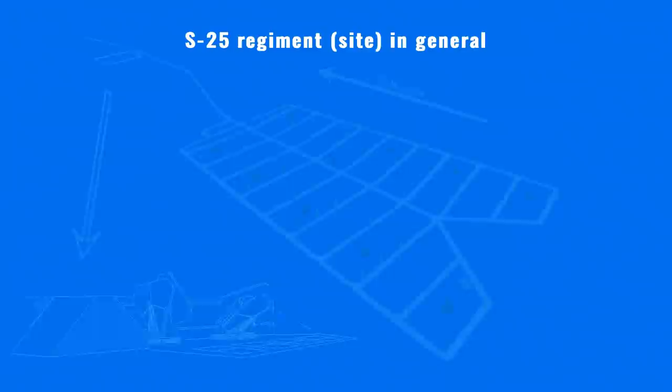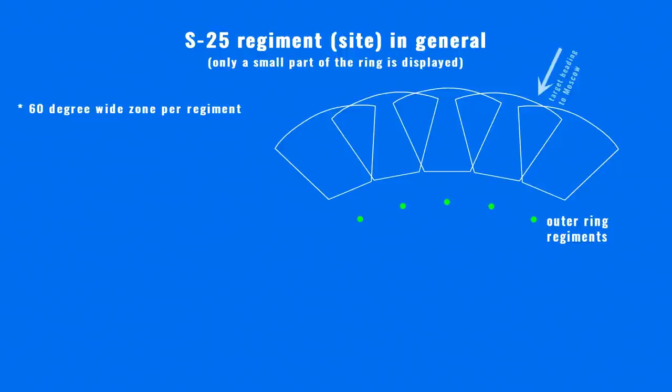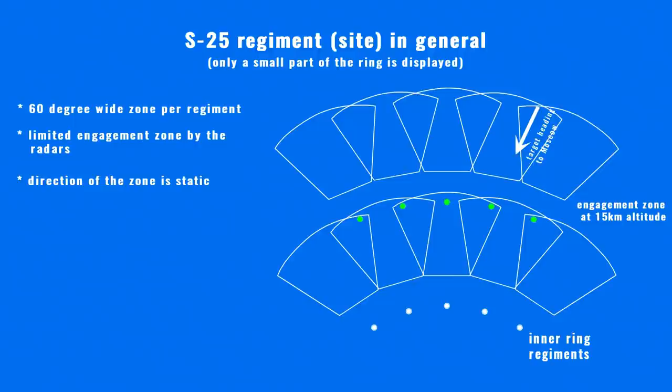The S-25 batteries were not all 100% identical, but the basic layout of the sites was similar. The sites could launch missiles only in directions outward of Moscow, due to the design of the Yo-Yo antenna system. Once a target reached the minimal engagement range of the outer ring, only the inner ring could launch missiles once the target reached its zone. Because of the basic working principle and design of the Yo-Yo fire control radar system, every missile site had a static engagement zone.